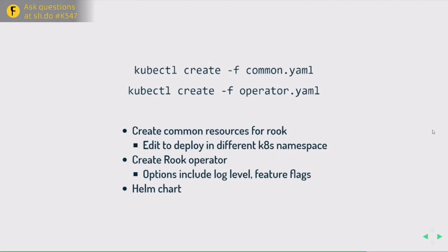The operator.yaml lets you change options for the operator: the log level, various feature flags like CephFS support, and support for flex volumes or CSI. Alternatively, instead of using YAML files directly, you can use the Rook Helm chart. Helm also helps with upgrading — there's manual work when going from one version of Rook to the next, and Helm makes that easier, though it adds its own complexity as a trade-off.